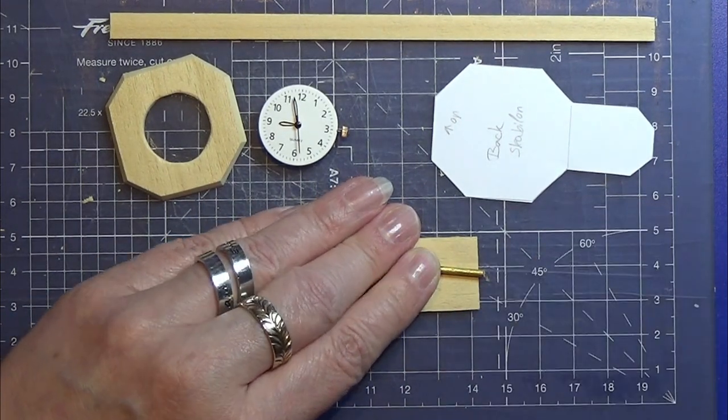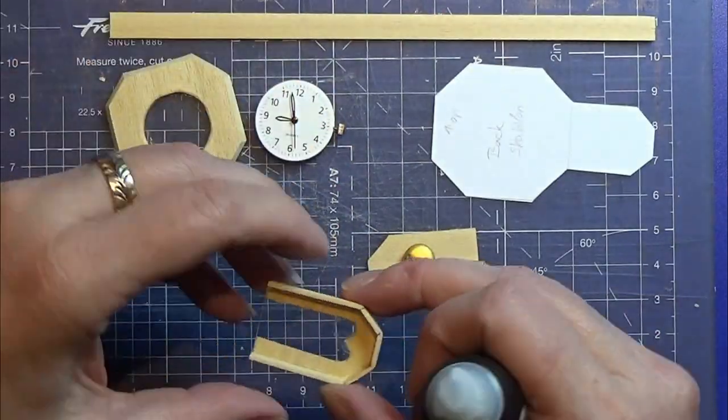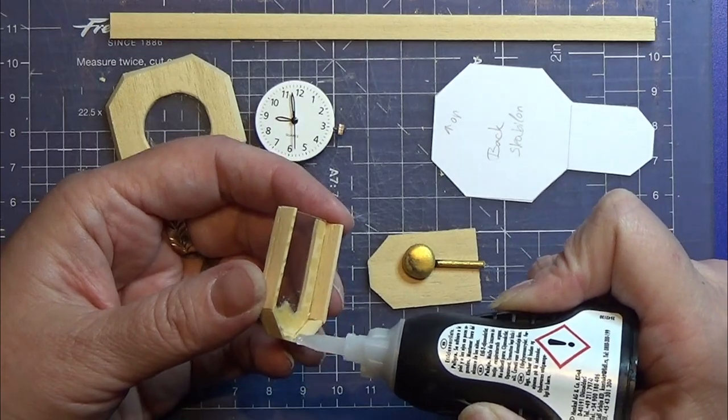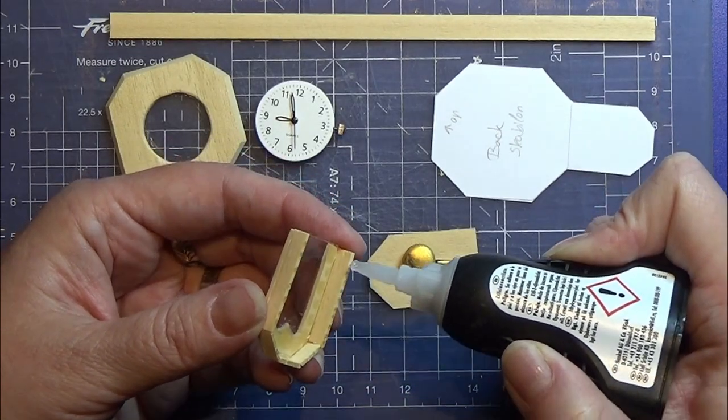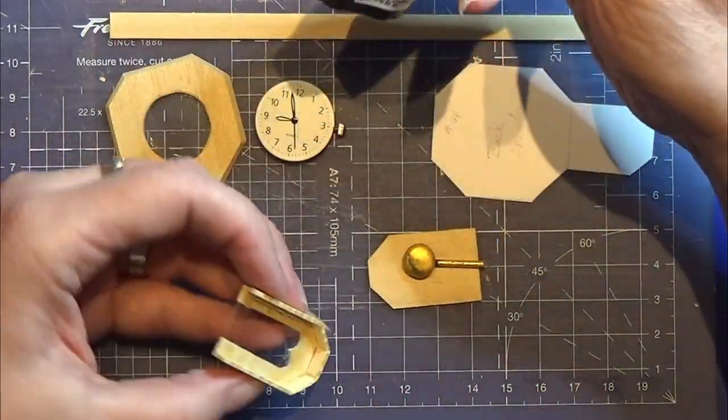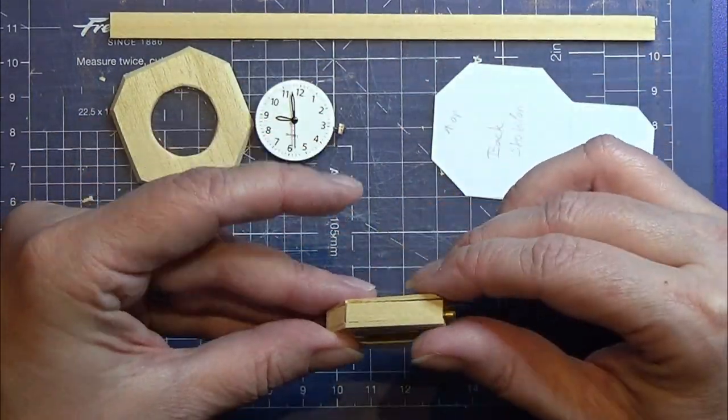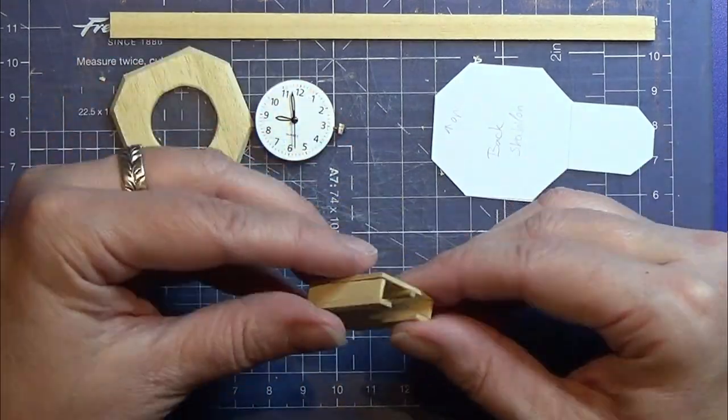I am making the part where the pendulum is going to sit. First of all, I'm just cutting the toothpick down into size and I'm gluing the pendulum onto the back side of this pendulum case. And then I'm going to close up this little part for the pendulum.